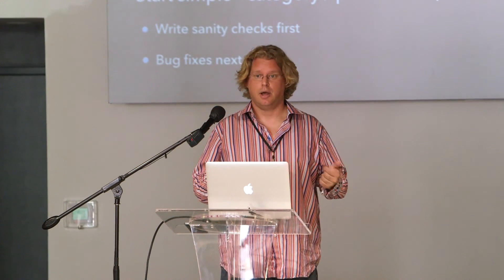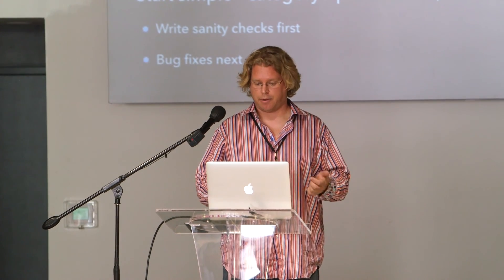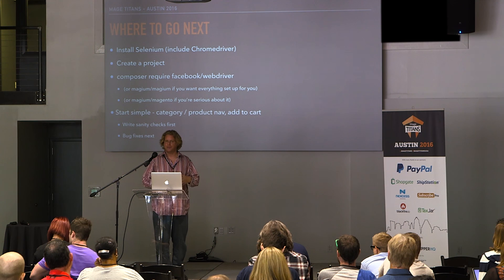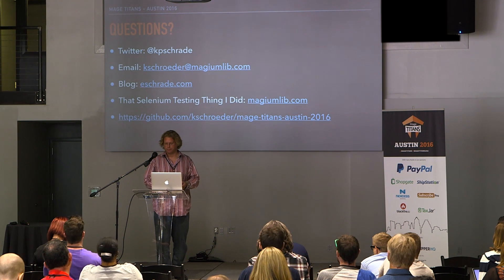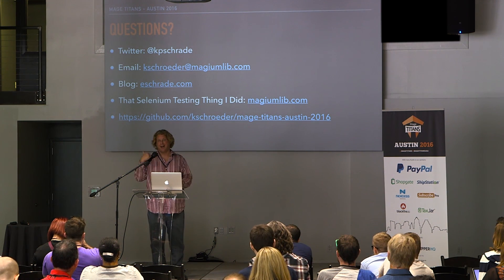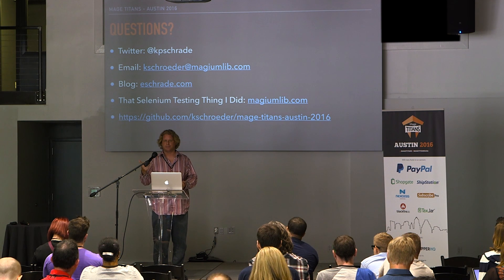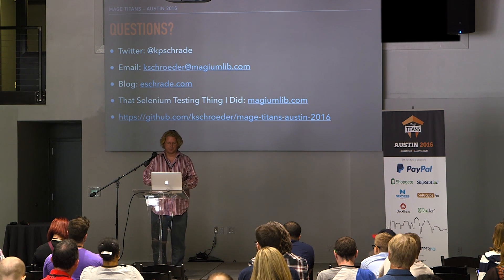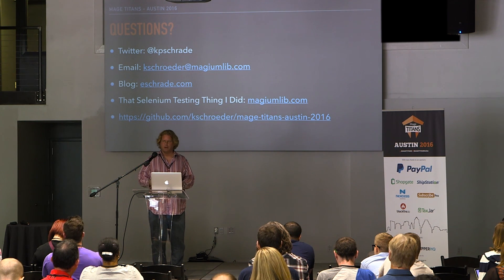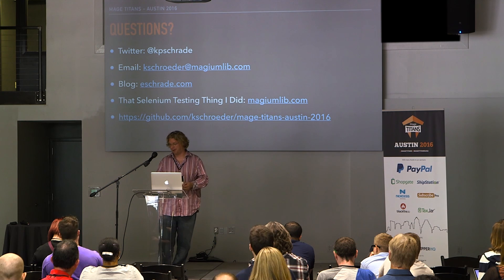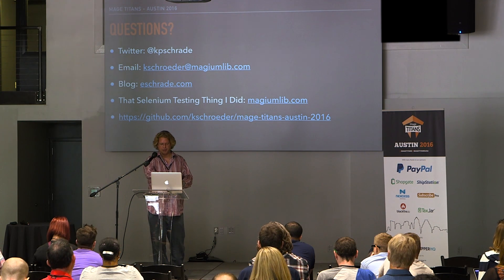Start simple — start with a simple category, product nav, add to cart, do some basic sanity checks first, maybe bug fixes, and just build it into your process as you go along. As you get better at it, you're going to find there's a lot more you can do. We'll take some questions if you have them. My Twitter account's there. If you want to talk more about this, feel free to email me at kschrader at MagiumLib. My blog is at eshrade.magmlib.com. And if you want access to the source code, which should run without any problems from PHP unit, you can get it on that GitHub link. Thank you.